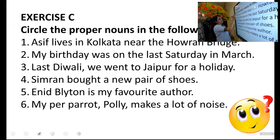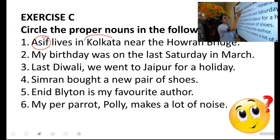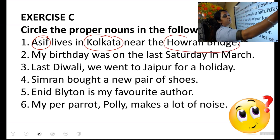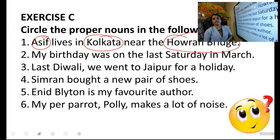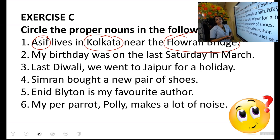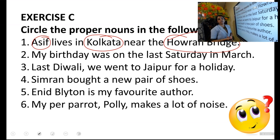There are three proper nouns in the first sentence. Asif is the name of a person. Kolkata is the name of a place. Then Hora Bridge — another name of a place. These are the special names given to a person and places, so they are all proper nouns. And they are all written with a capital letter — Asif's A, Kolkata's K, and Hora Bridge's H and B are all capital letters.